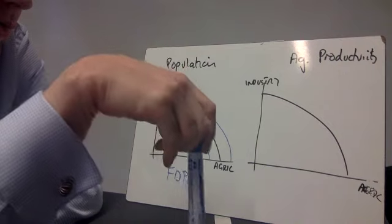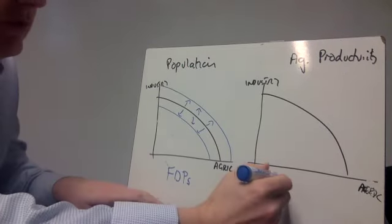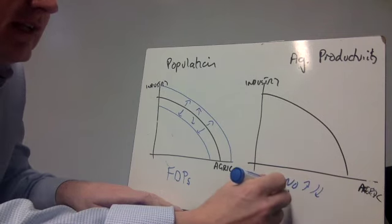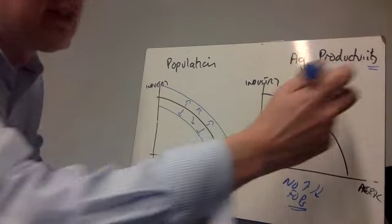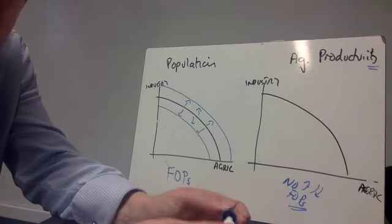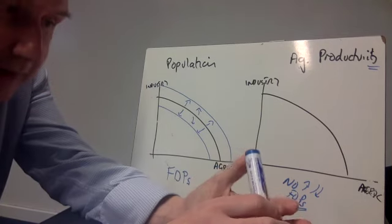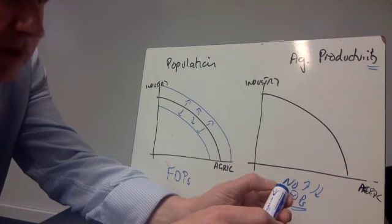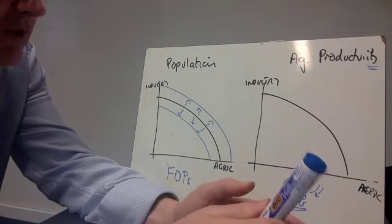Let's suppose that agricultural productivity increases. I think the key point here is that there's no change, no increase or decrease in factor production. It's just that productivity, which is output per worker, has got better. Perhaps we've found new ways of doing things, new techniques. We've discovered that we can use pesticides more effectively, or perhaps new ones have been invented.